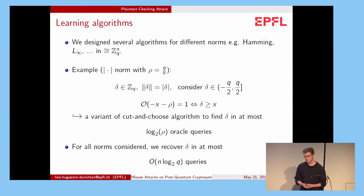Here is a small example where we consider delta in ZQ, rho equals Q over 8. Delta is in ZQ, but we consider the value between minus Q over 2 and Q over 2. And after some computation, we find that if we query O of minus X minus rho and we obtain 1, this is actually equivalent as having delta greater or equal than X. So by varying this value X, we can design a binary search or a cut-and-choose algorithm to find the noise delta in at most log of rho queries.